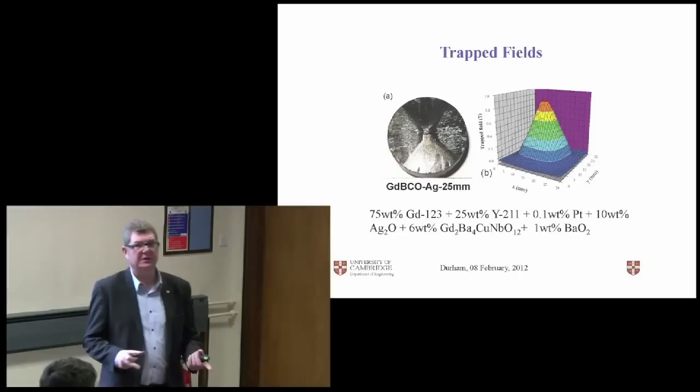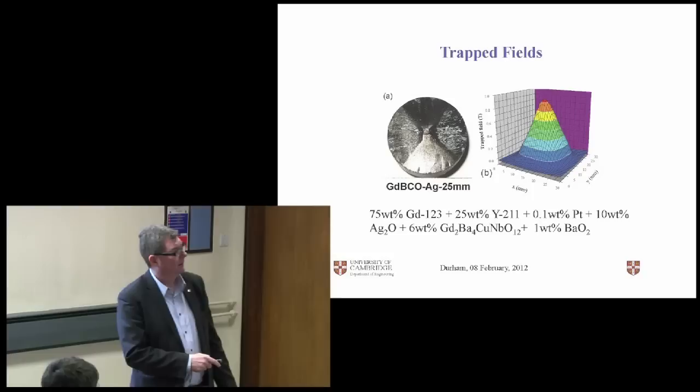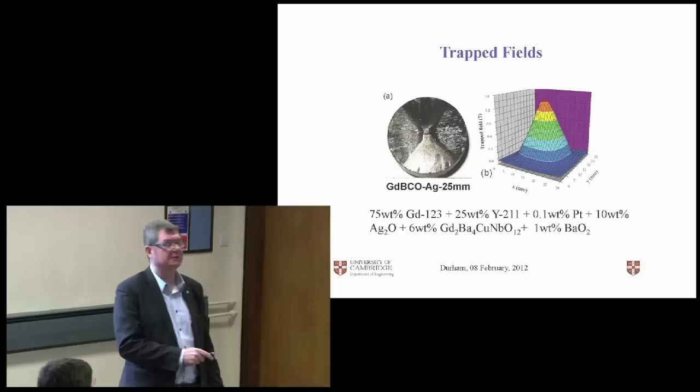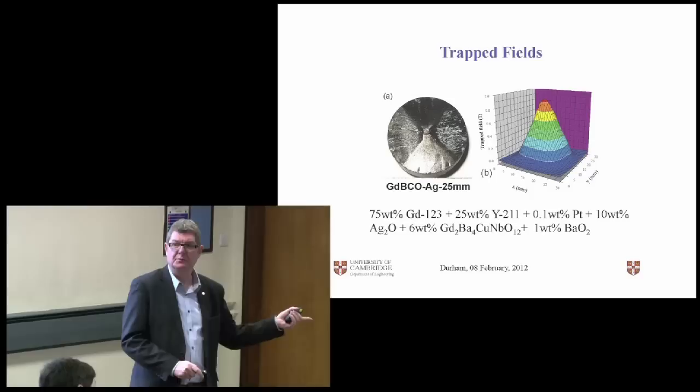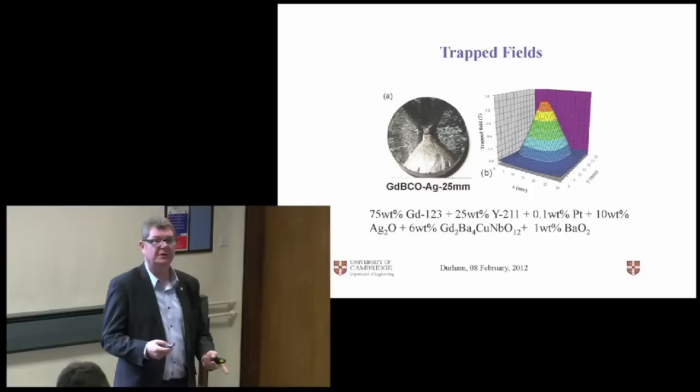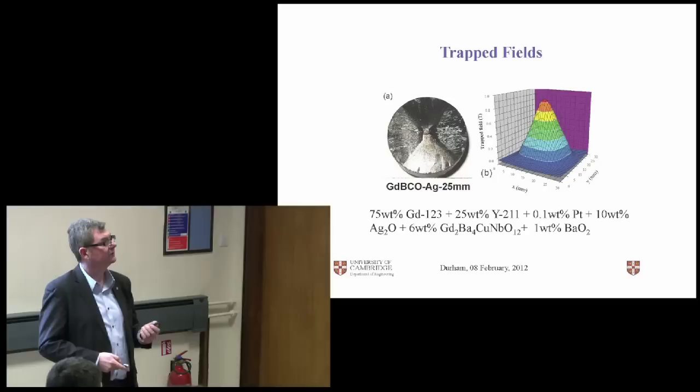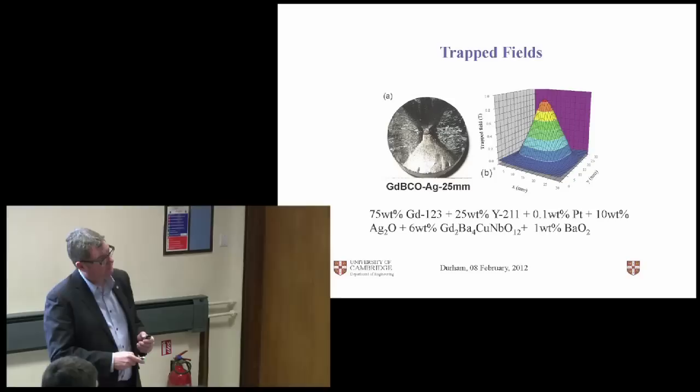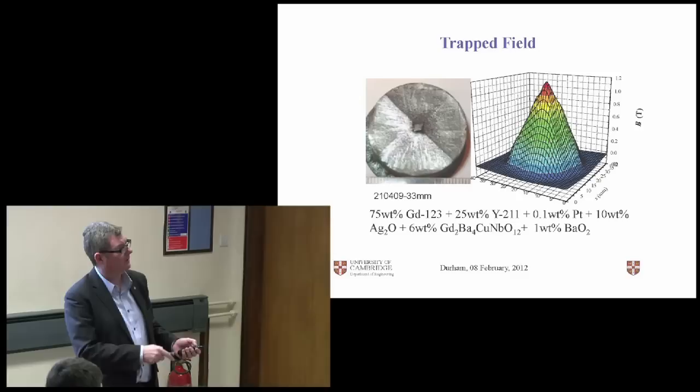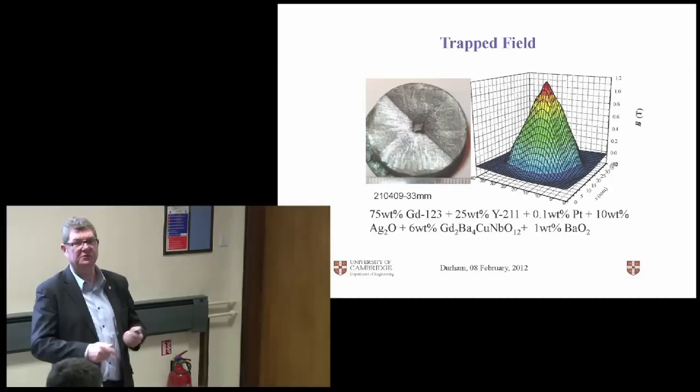So after all that, what trapped field do you get? Well, in theory, the bigger the sample, the bigger the trapped field. So this is a gadolinium barium copper oxide sample. It's only 25 millimeters diameter, and we're getting a trapped field of more than a Tesla. The whole point about bulk samples is that if you then levitate a permanent magnet using a bulk sample, that levitation is stable. So you get this nice inverted beam code. We've applied the field, we've removed it, and we've scanned the Hall probe across the surface, and you can see this peak field is getting up to one Tesla.